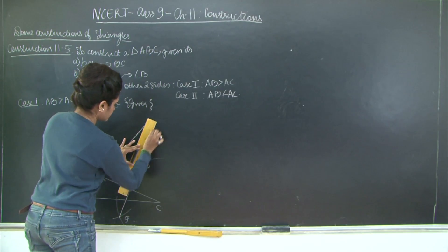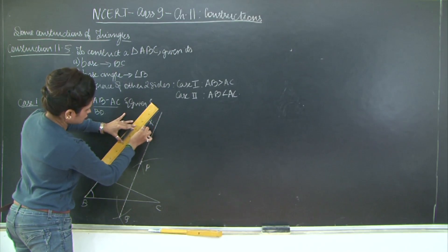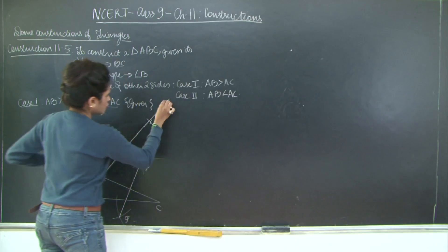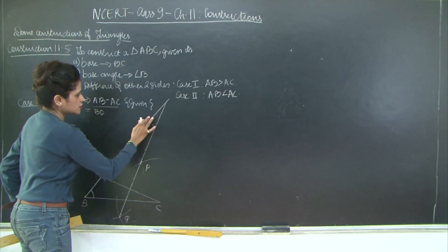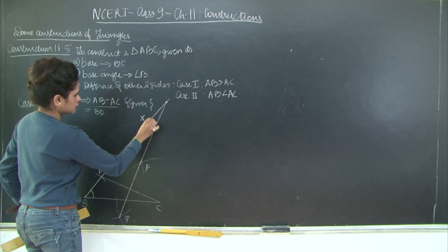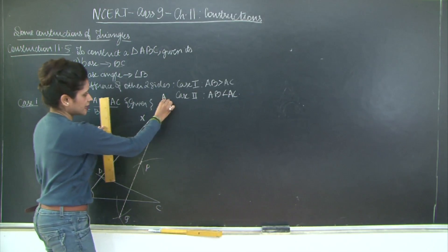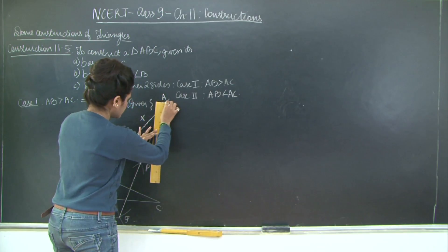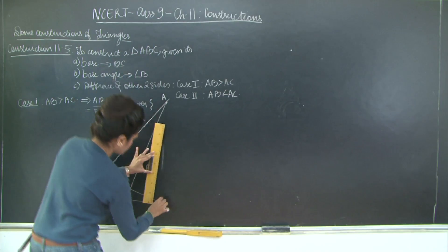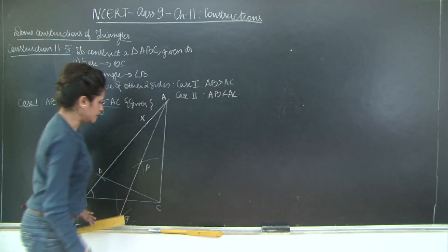Let us extend this line on both sides. We mark the point of intersection — this is your angle X, angle XBC. Now we will mark the point of intersection of BD extended and the perpendicular bisector of DC as point A. Then join A to C.